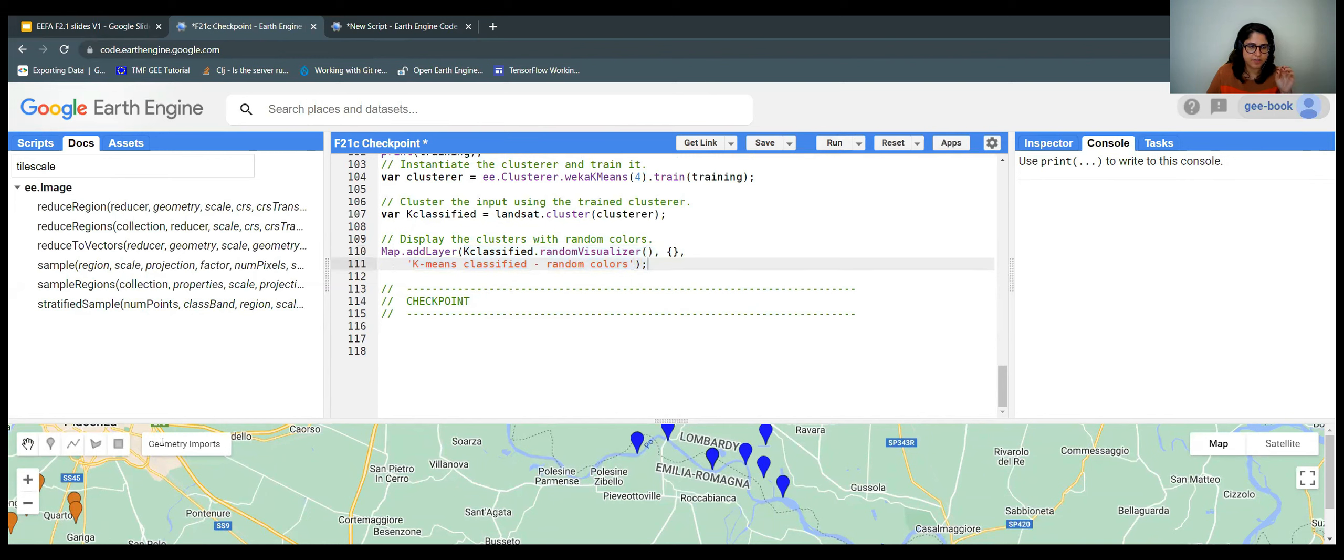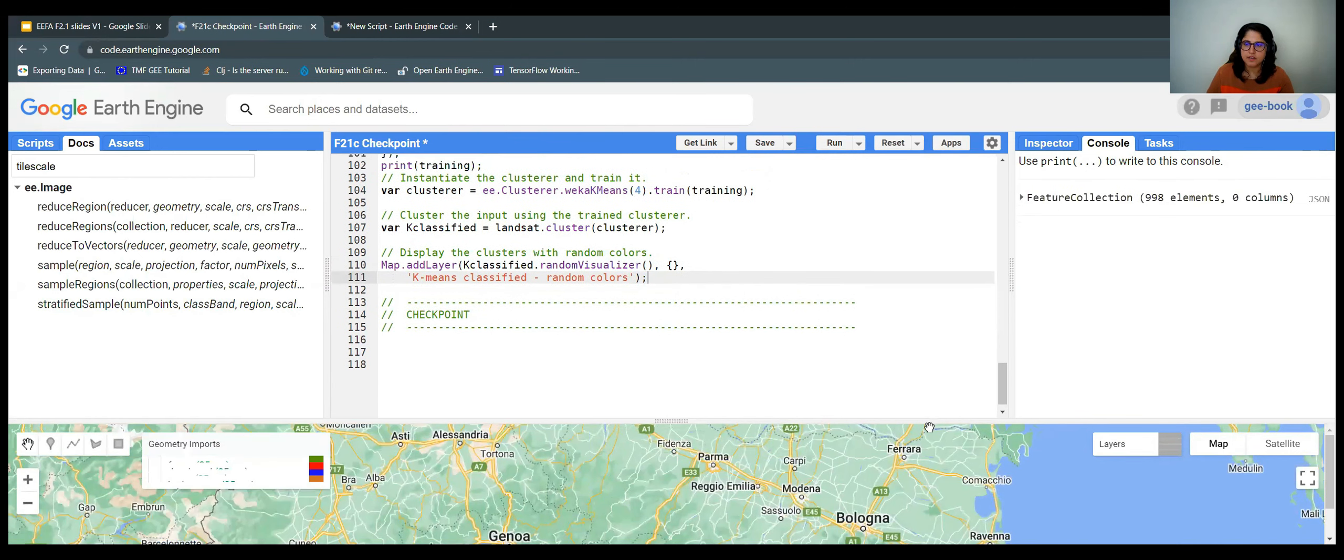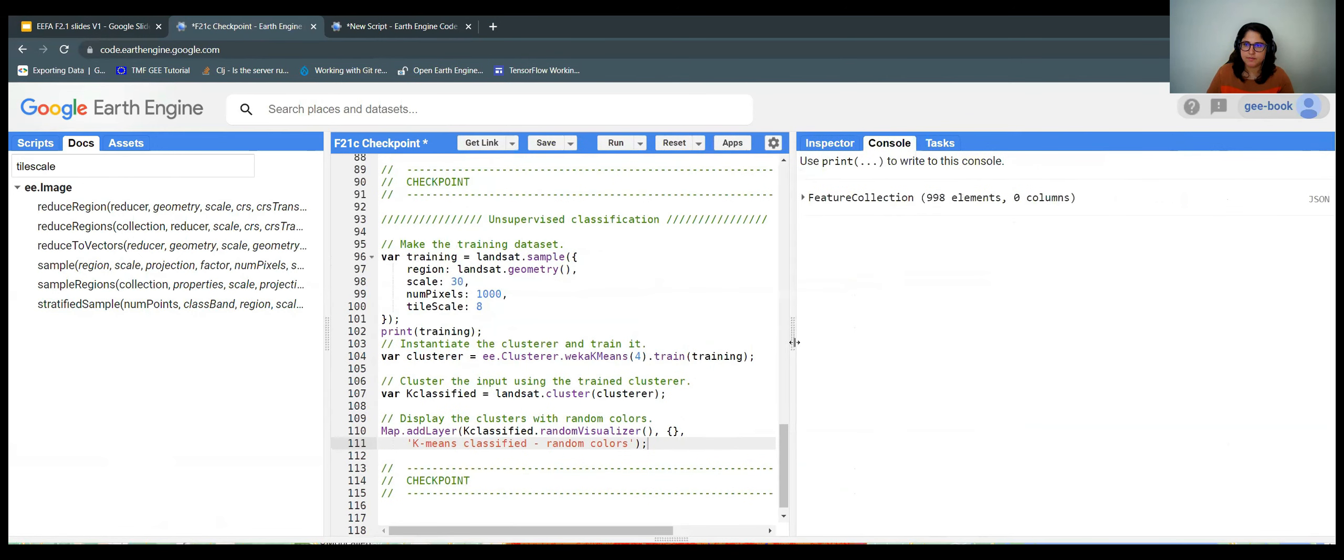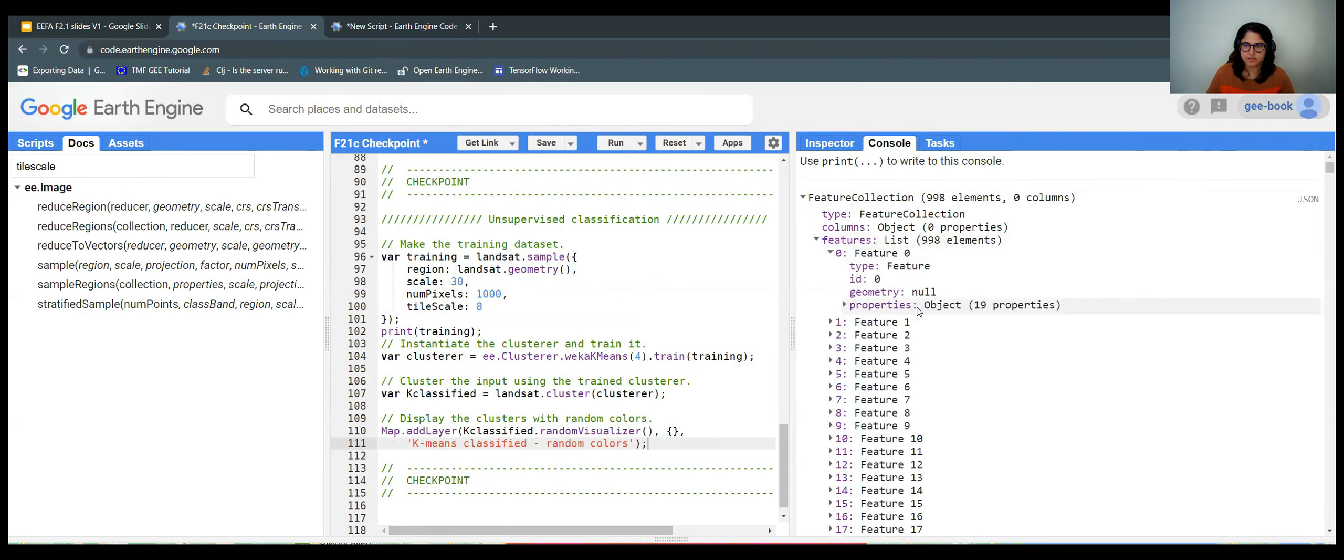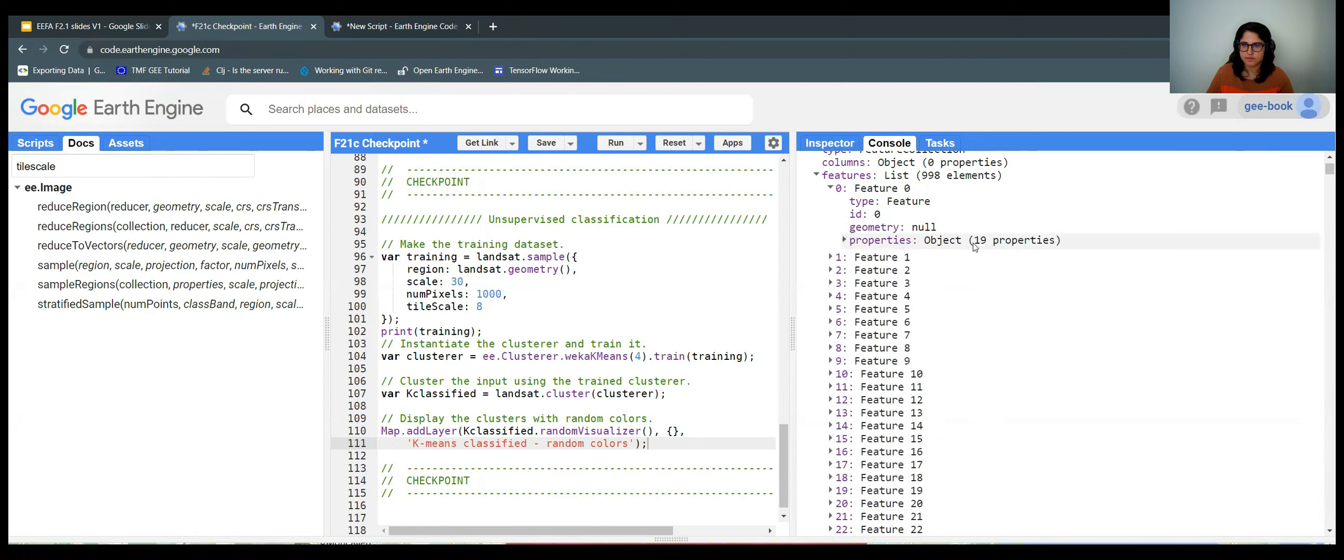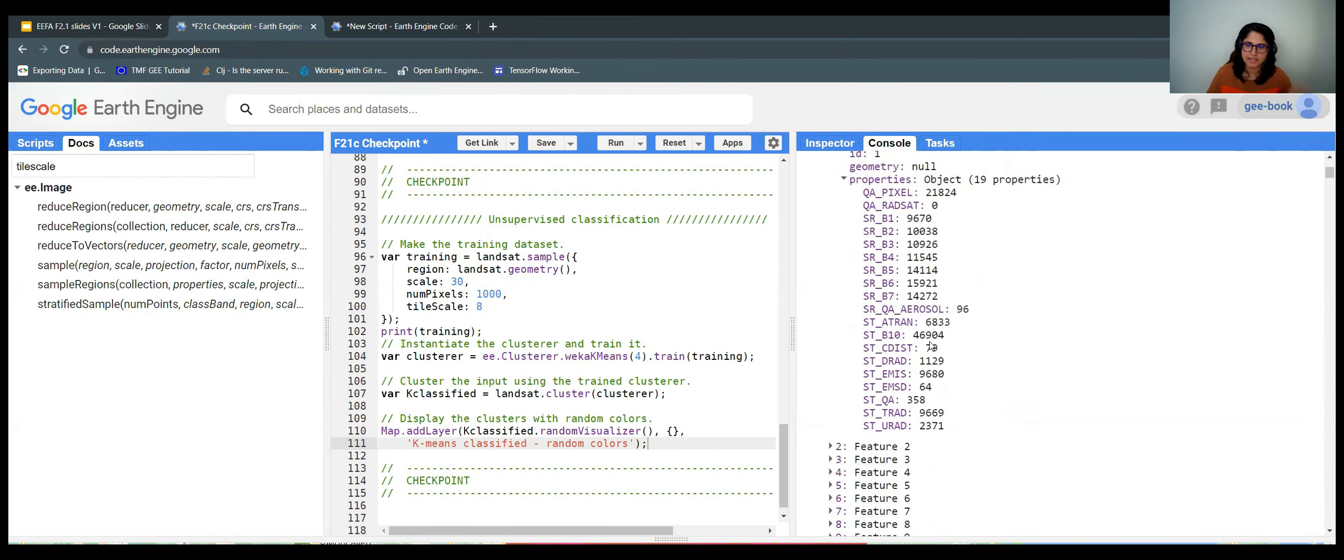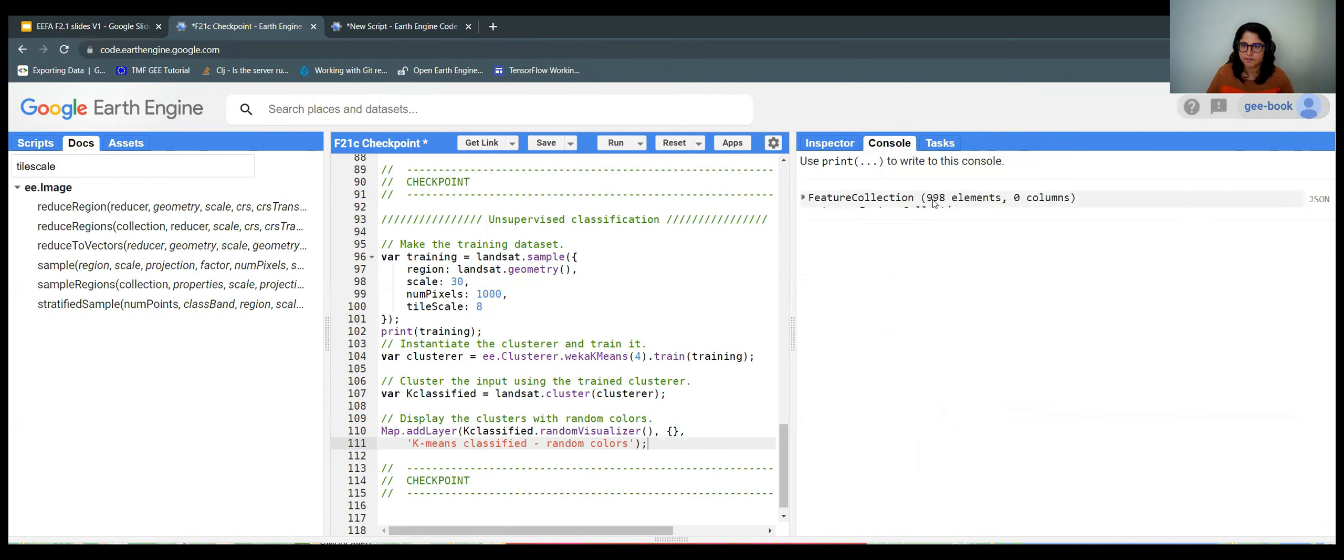So I'm going to turn off here the geometry really quick. And just to show here, before we look into the map, for features, we have all this information. So we don't have the class information, but we have all the band information from the image. Just to show that we don't have labeled class zero, class one, because we don't use labeled training data for unsupervised.